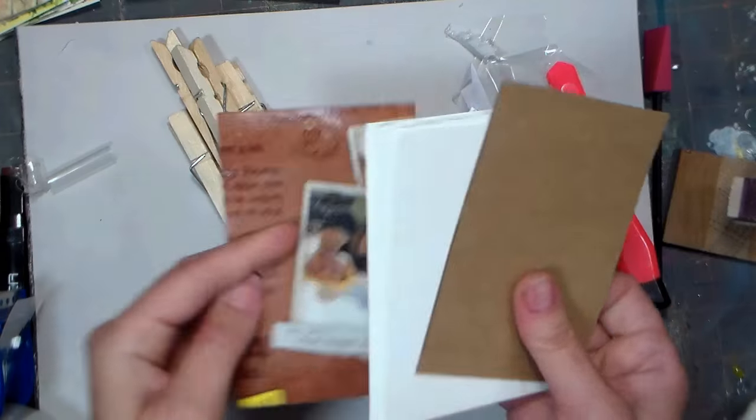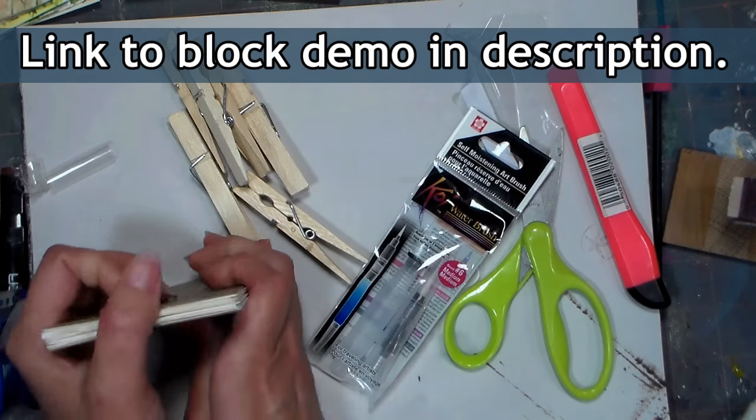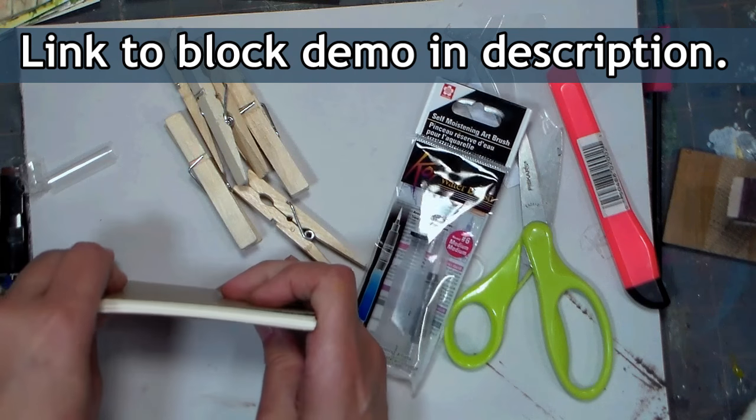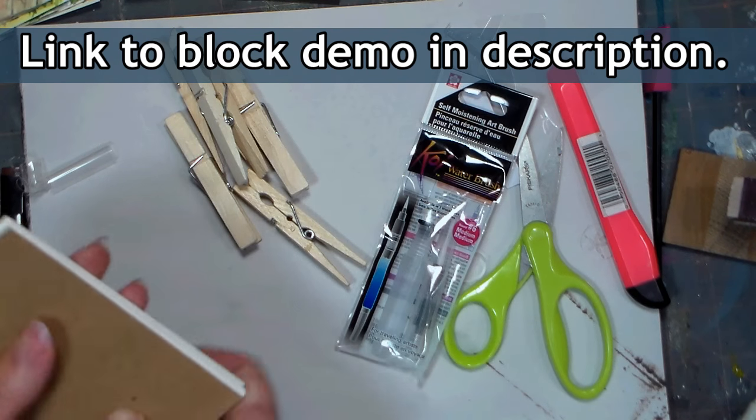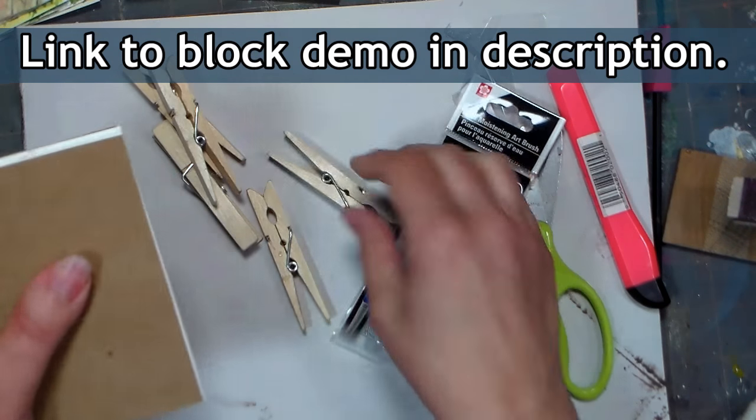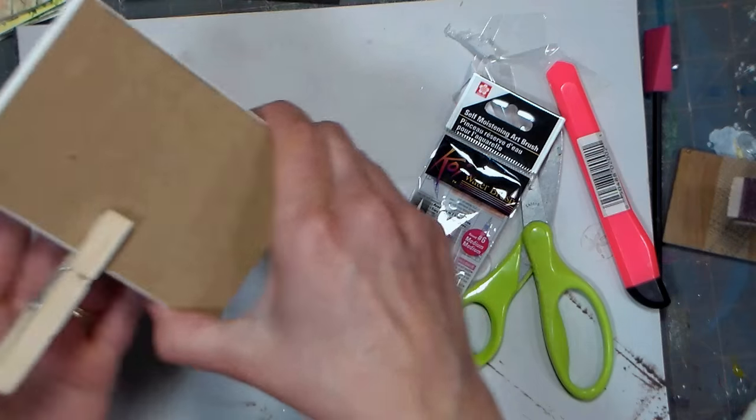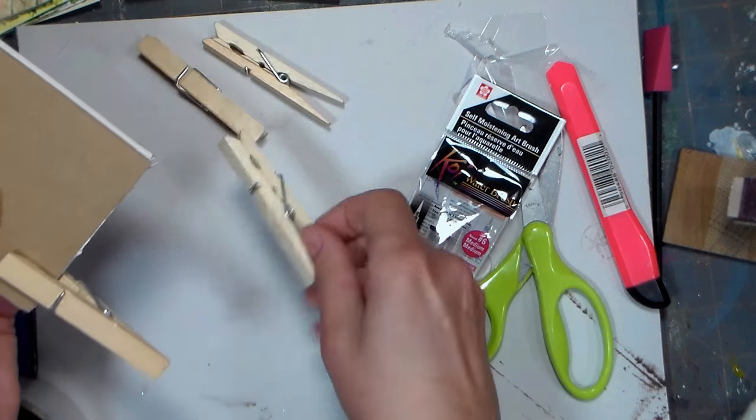I decided to make a tiny watercolor block to go with this, something that would fit in my front fishing vest that I wear when I kayak. That way I won't have to tip over my kayak trying to reach in the back storage area to get my paper. So what I did was I cut down two pieces of watercolor paper that were 9x12, and I could get 16 sheets of four and a half by three inch paper.